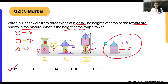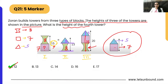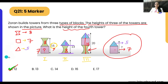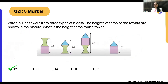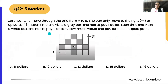This was an easy question. We simply substitute the values — finding the triangle height, then the square, then the green piece — and put them into the fourth tower to get its height.